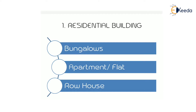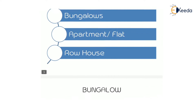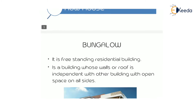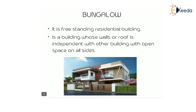Residential buildings are classified into three types: bungalows, apartments, and row houses. A bungalow is a freestanding residential building whose walls and roof are independent of other buildings, with open space on all sides. This is the simple picture of a bungalow — you can see it is a freestanding residential building with all four sides open.